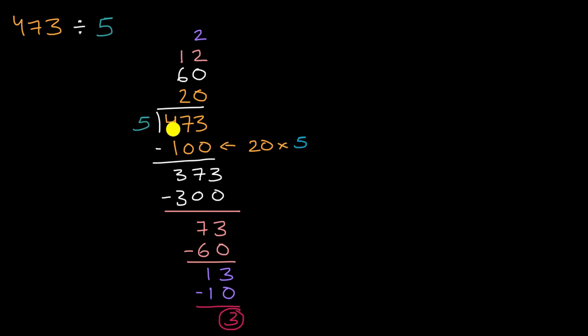So how many times does 5 go into 473? Well, we were able to get it in there 20 times, and then another 60 times, and then another 12 times, and then another 2 times. So what we can do is we can add all of these together. And what do we get? 2 plus 12 is 14 plus 60 is 74, plus 20 is 94. And then we have a remainder of 3. So this is equal to 94, and then I'll write this in red with a remainder of 3.